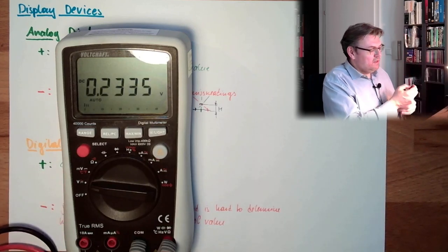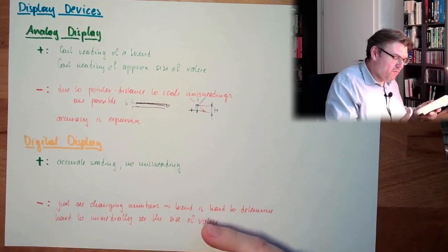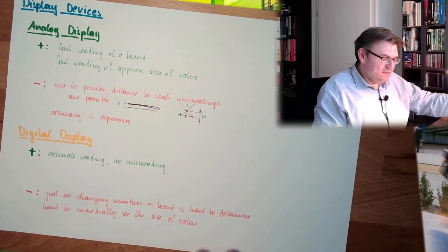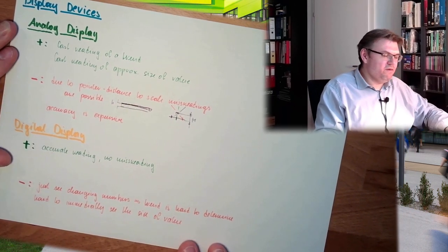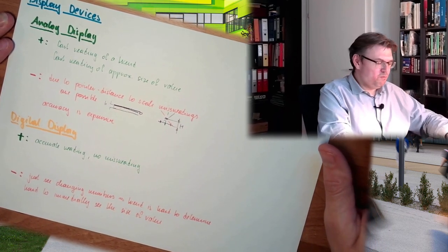This helps. This helps to overcome those downsides. That we can see a trend. That we can see the size of a value immediately. And see if something is off and so on. So that's a possibility.